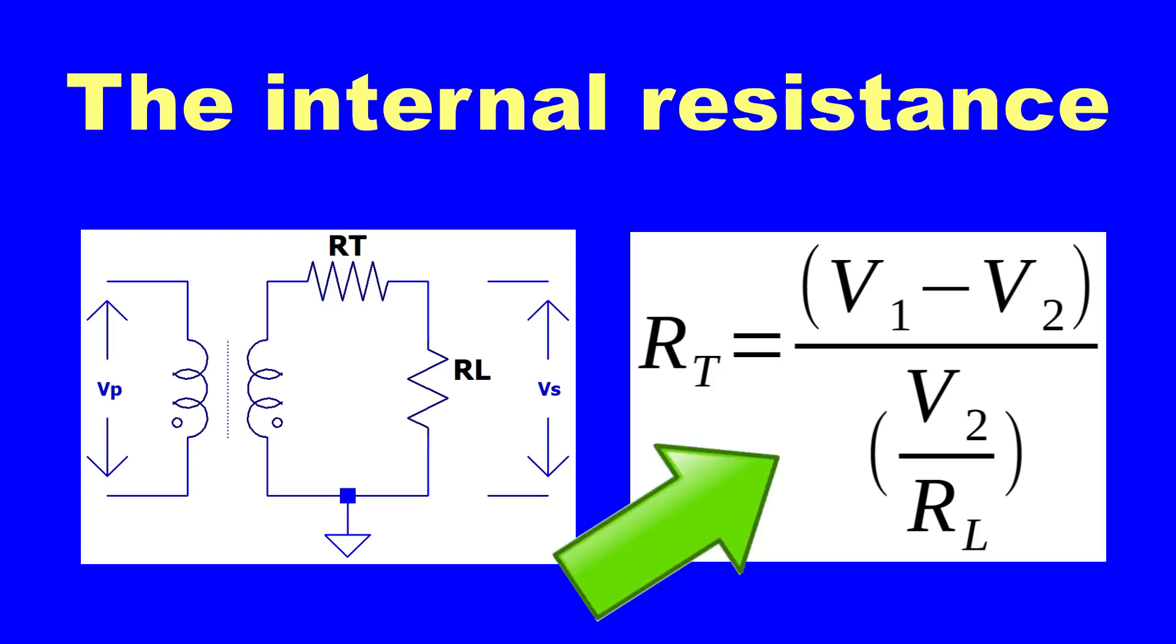The formula for calculating the internal resistance of the transformer involves dividing the difference between the two voltages by the current flowing through the circuit.